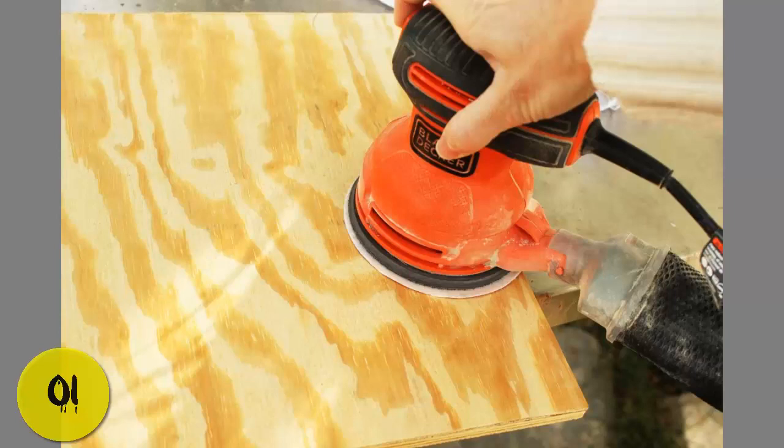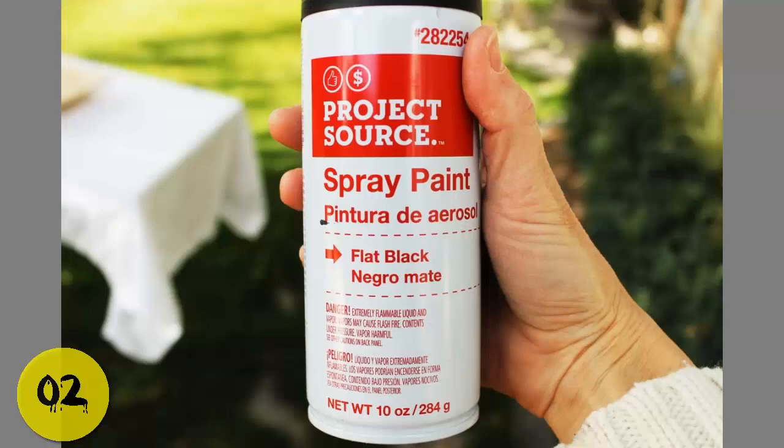Step 1: Begin by sanding the edges and surface of your plywood. Wipe away any resulting sawdust and place your plywood on an elevated wood on top of a drop cloth.